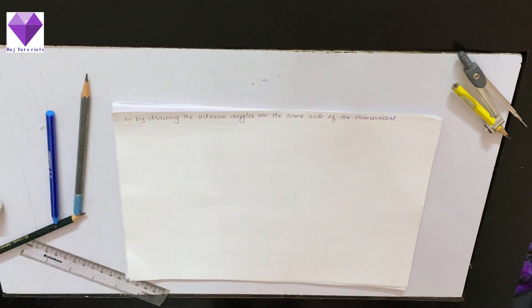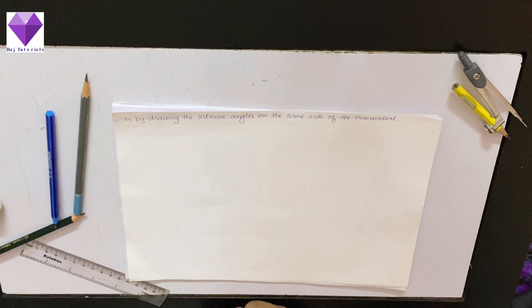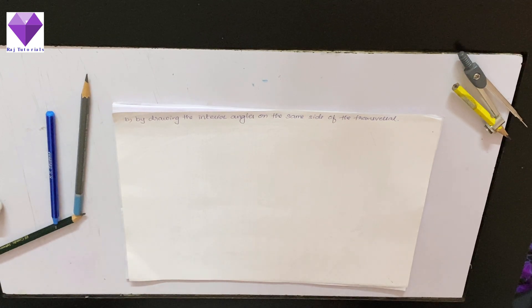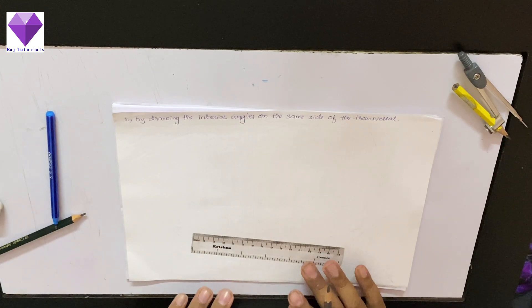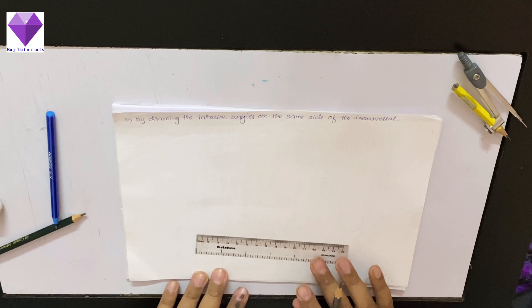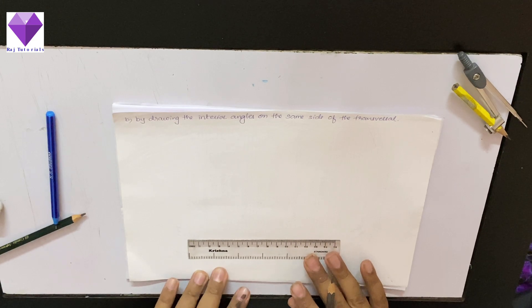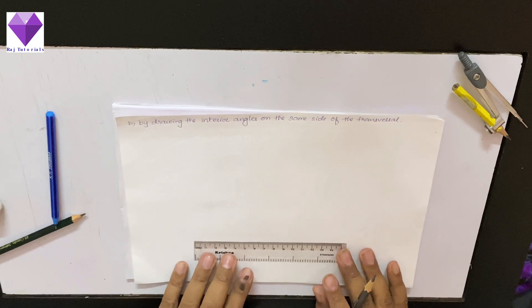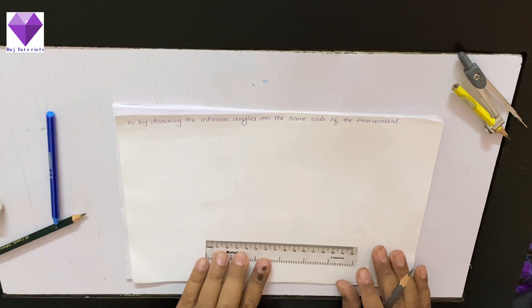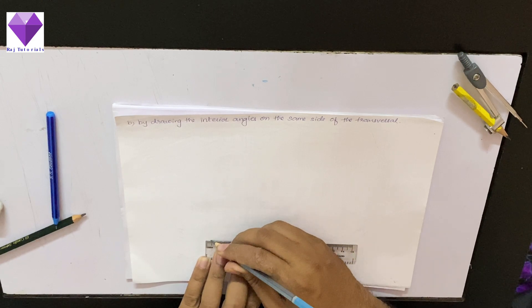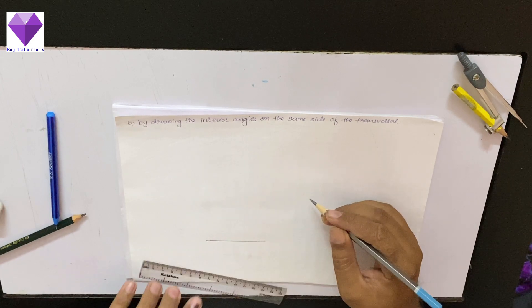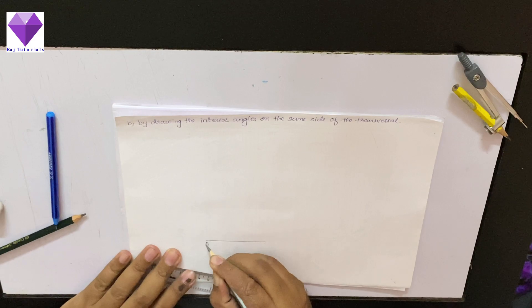Hello students, now the question 1, second part is, draw segment AB equal to 6 centimeter, mark a point P outside the line segment AB, draw a line CD parallel to AB passing through the point. Now, here I am given by drawing the interior angles on the same side of the transversal, so I can use a technique to do this sum easily.